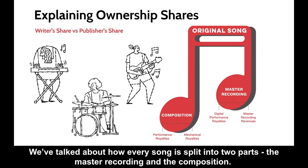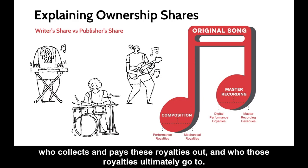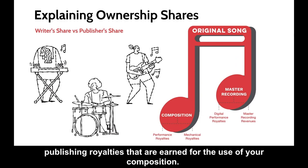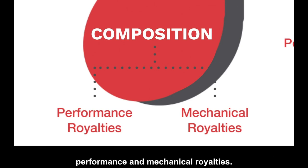We've talked about how every song is split into two parts: the master recording and the composition. As you begin to break down those two parts further, you learn more about the types of royalties that each earn, who collects and pays these royalties out, and who those royalties ultimately go to. For the purpose of this video, we're going to focus on the composition only and discuss the publishing royalties earned. For every composition that is created, there are two main types of royalties that can be earned: performance and mechanical royalties.